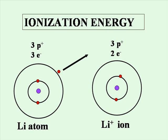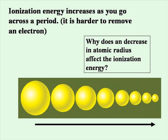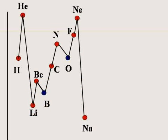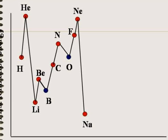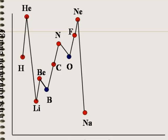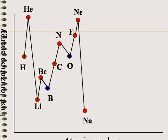Ionization energy is the energy needed to remove an electron from its outer orbital in order to form a positive ion. It is much harder to remove electrons from smaller atoms since these electrons are held much tighter to the nucleus. So ionization energy increases as you go across a period. As we go across a period of the periodic table, the ionization energy tends to increase as the atomic radius decreases.